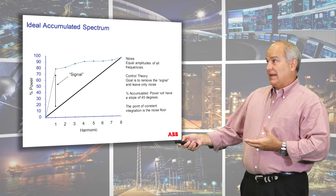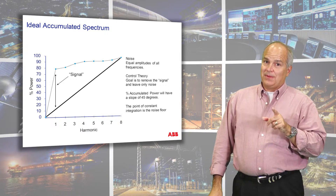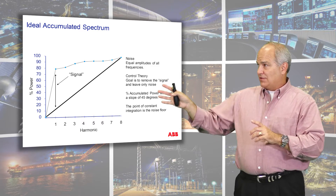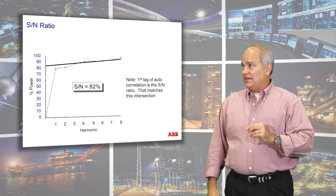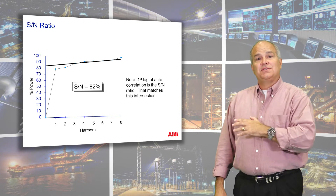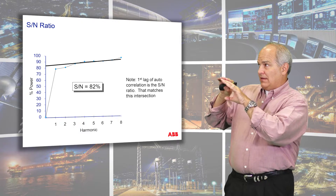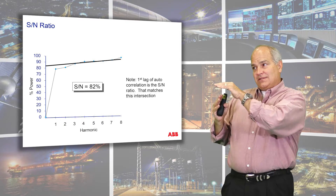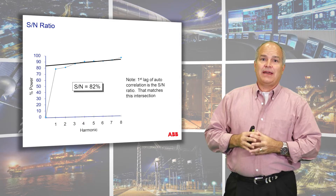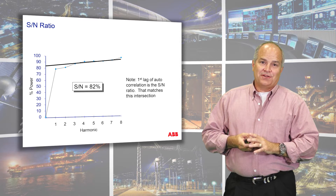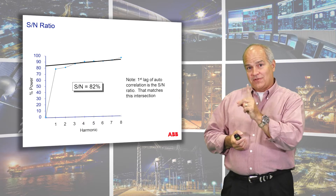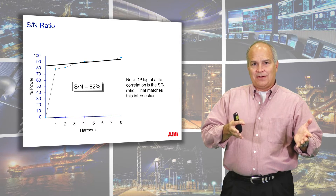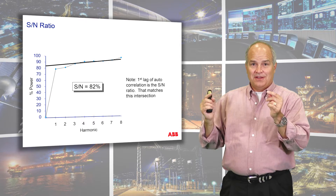The energy in your data set that pushes away from noise causes the accumulated power spectrum to deviate from the 45-degree line. Once it starts accumulating at a constant slope again, you've reached the noise component. The signal-to-noise ratio can be visualized: once the accumulated power spectrum returns to a constant slope, extrapolate that slope back to where it crosses the Y-axis — that's the signal-to-noise ratio. This turns out to be the same as the first lag in an autocorrelation, so the accumulated power and the first lag of an autocorrelation cross at the same spot.